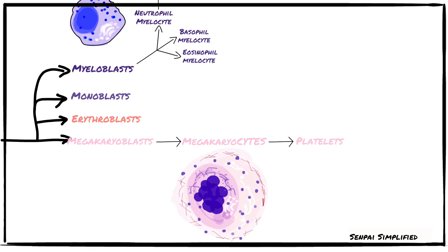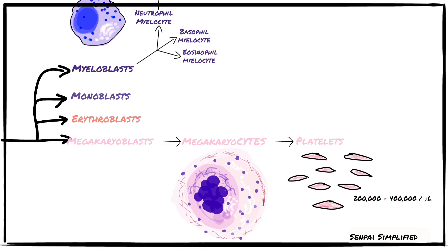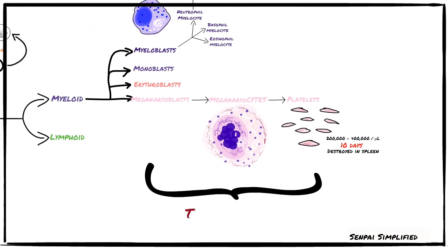The cytoplasm of megakaryocytes is divided into three zones: the perinuclear zone, the intermediate zone, and the marginal zone. The perinuclear zone consists of Golgi, rough endoplasmic reticulum, centrioles, and spindle. The intermediate zone consists of interconnected vesicles, and the marginal zone contains the cytoskeletal filaments. Megakaryocytes finally develop into platelets — disc-like, non-nucleated fragments numbering about 200,000 to 400,000 per microliter of blood.